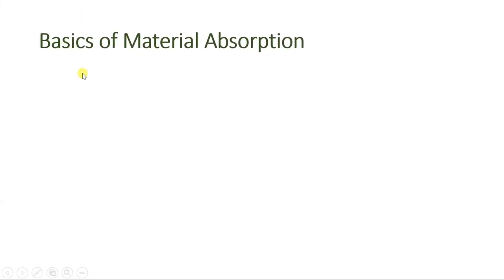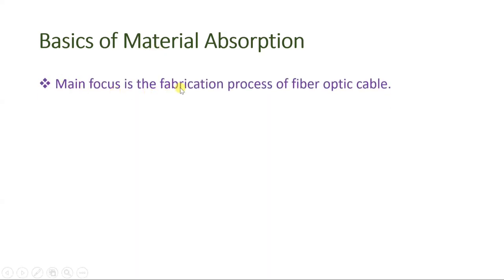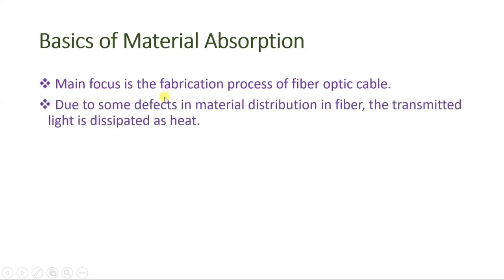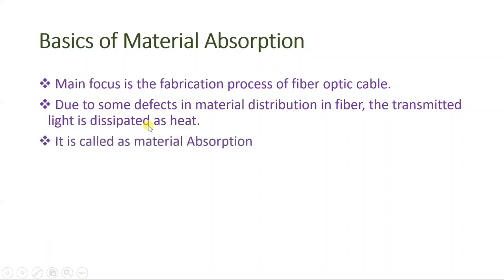The first agenda is the basics of material absorption. The main focus is the fiber fabrication process. When you fabricate optical fiber, due to some defects in material distribution in the fiber, you will find that transmitted light is dissipated as heat. This dissipation of the light signal as heat results in material absorption, and that is what we will see in this session.